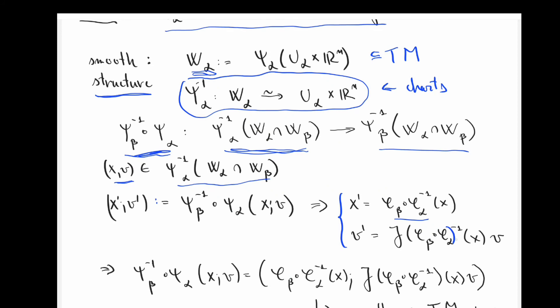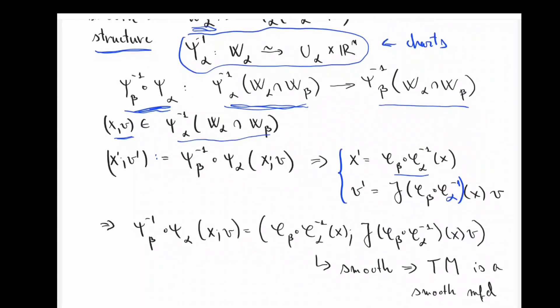So this means that I have a relatively simple expression for the transition maps. The first component is this, the second component is this. What's good about both of these is that both of these components are smooth maps, making the tangent bundle a smooth manifold.